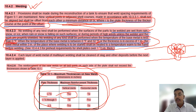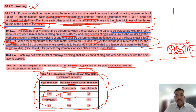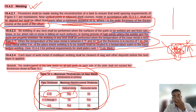The height from the plate surface to the top of the weld is called reinforcement. If the plate thickness is less than half inch and the joint is vertical, the reinforcement should be 3/32 inch. If the joint is horizontal, the reinforcement should be 1/8 inch. The point where the weld meets the base plate is called the toe.